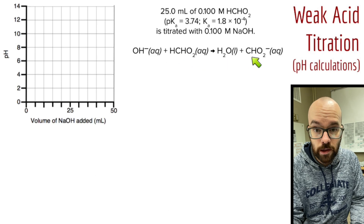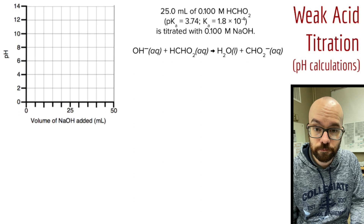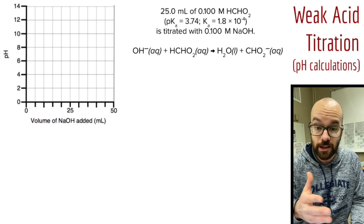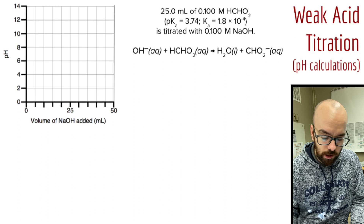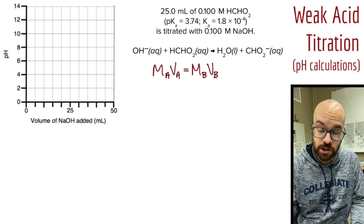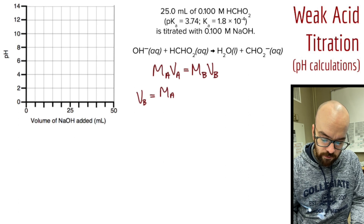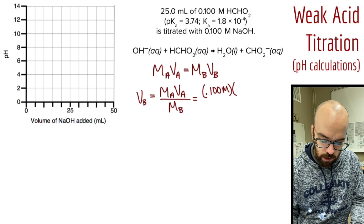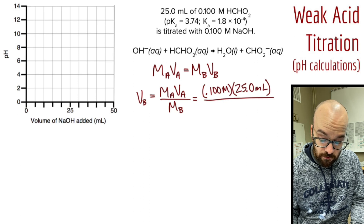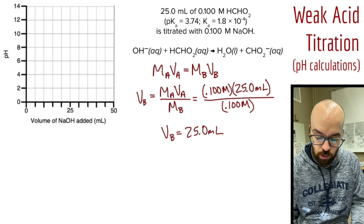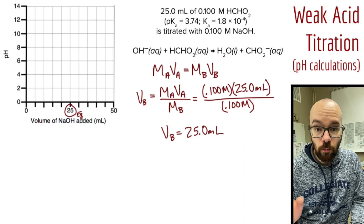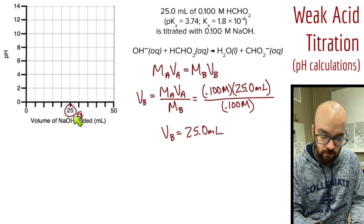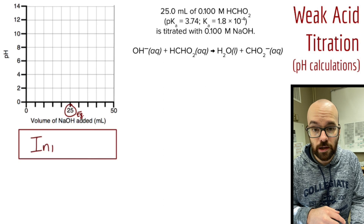The reaction: hydroxide ions from the strong base plus the formic acid molecule, written as HCHO₂ because it's a weak acid, produces water as well as formate, the conjugate base of formic acid. The first thing we need to find is how much NaOH we add to reach the equivalence point. Using MAVA = MBVB, solving for volume of base: 0.1 molar times 25 milliliters divided by 0.1 molar gives us 25.0 milliliters. We'll mark that spot on our titration curve as the equivalence volume.